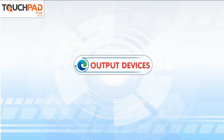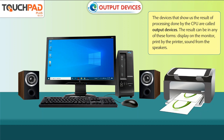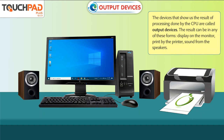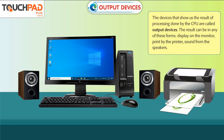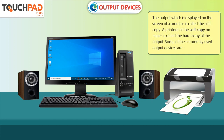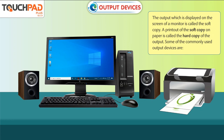Output Devices are the devices that show us the result of processing done by the CPU. The result can be in any of these forms: display on the monitor, print by the printer, or sound from the speakers. The output displayed on the screen of a monitor is called the soft copy. A printout of the soft copy on paper is called the hard copy of the output.